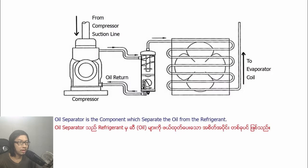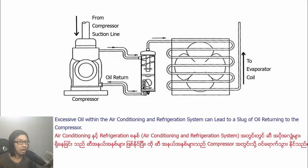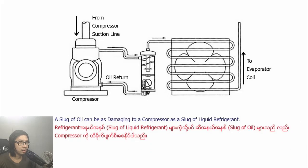An oil separator is the component which separates the oil from the refrigerant. Excessive oil within the air conditioning and refrigeration system can lead to a slug of oil returning to the compressor. A slug of oil can be as damaging to a compressor as a slug of liquid refrigerant.